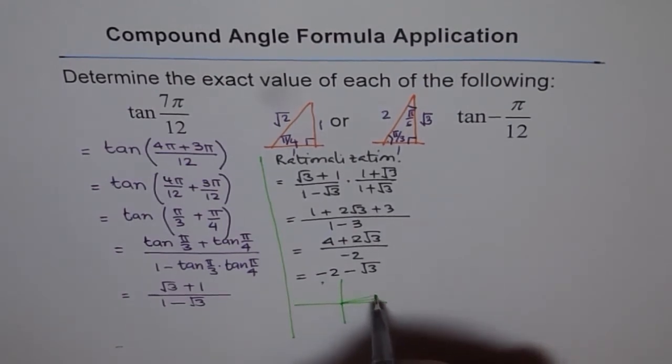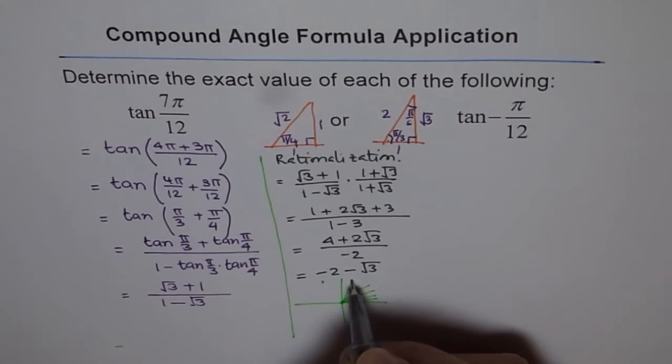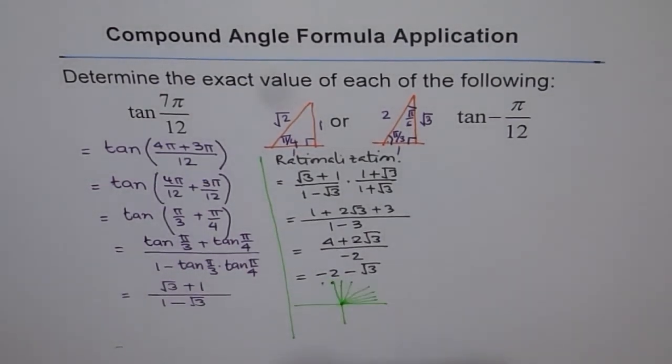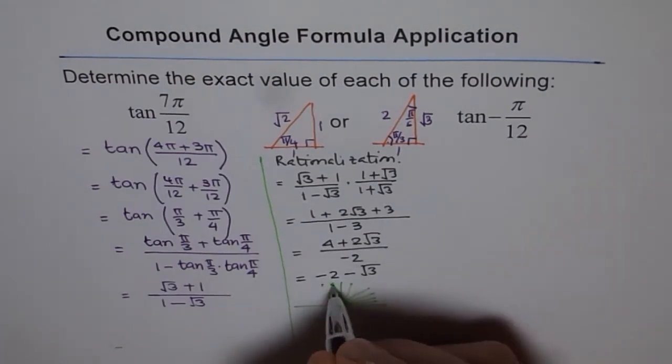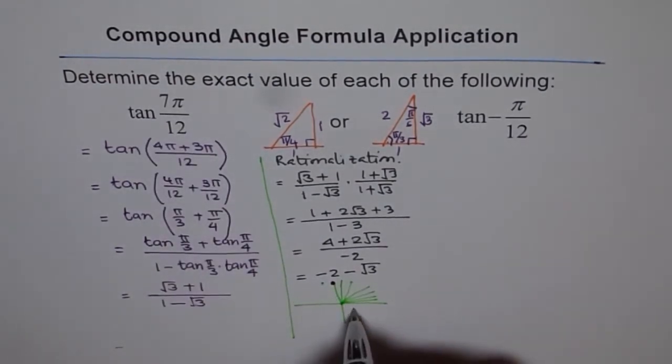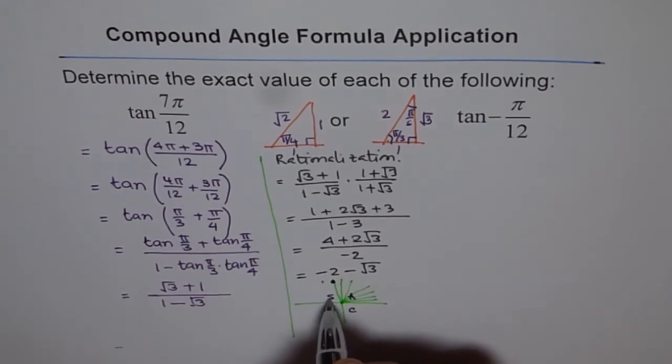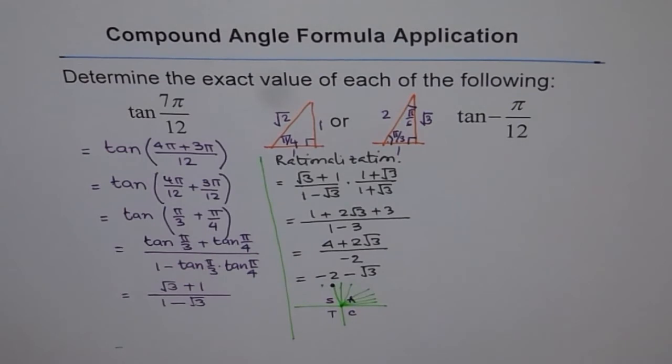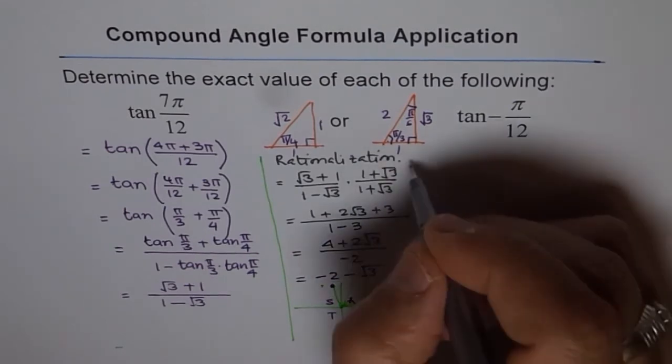So in this quadrant over here, tan is negative. You know the CAST rule. C A S T. Sine is positive here, not tan. So tan negative is the right answer. So we have solved this one. The other one is for you to do.